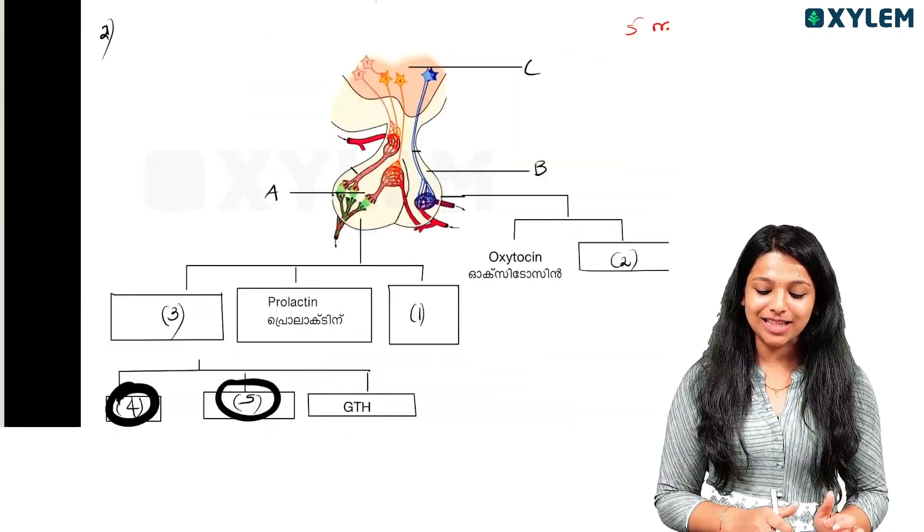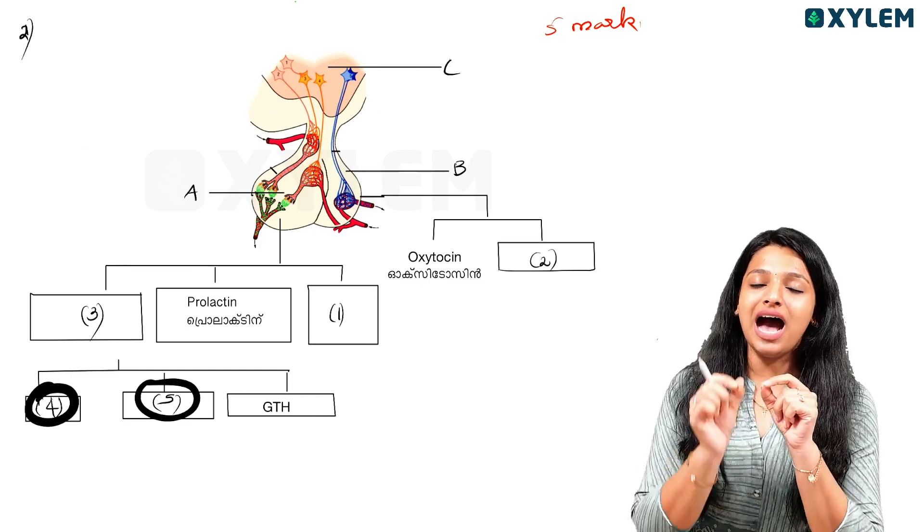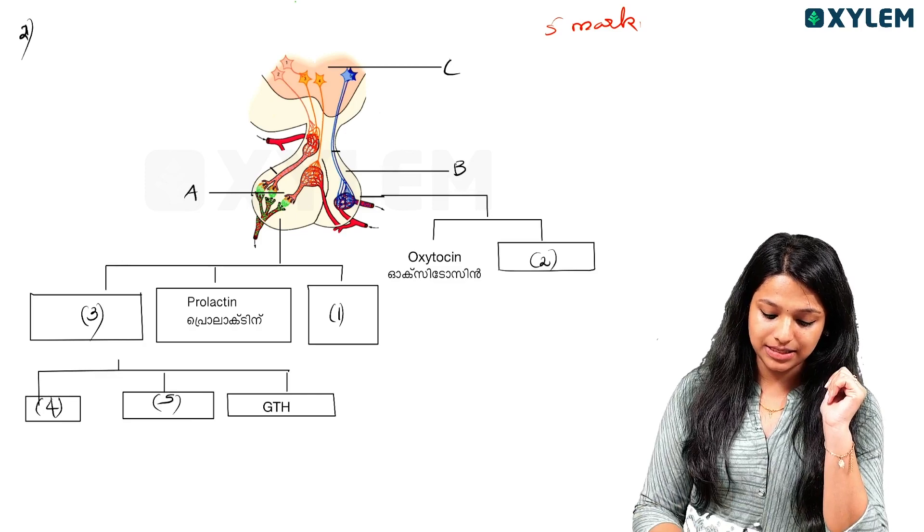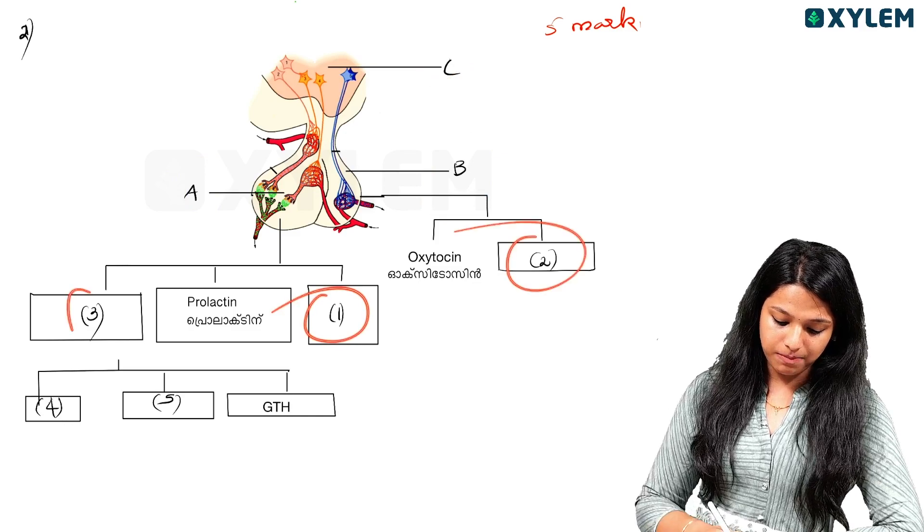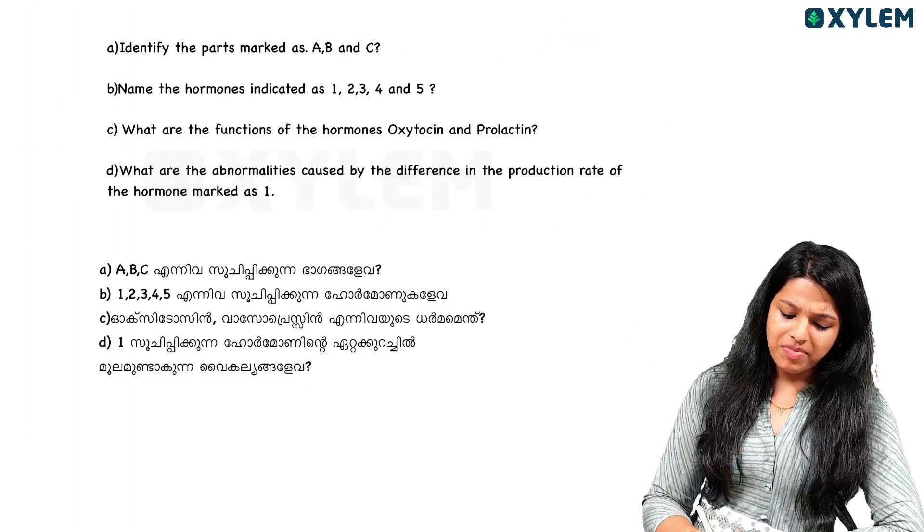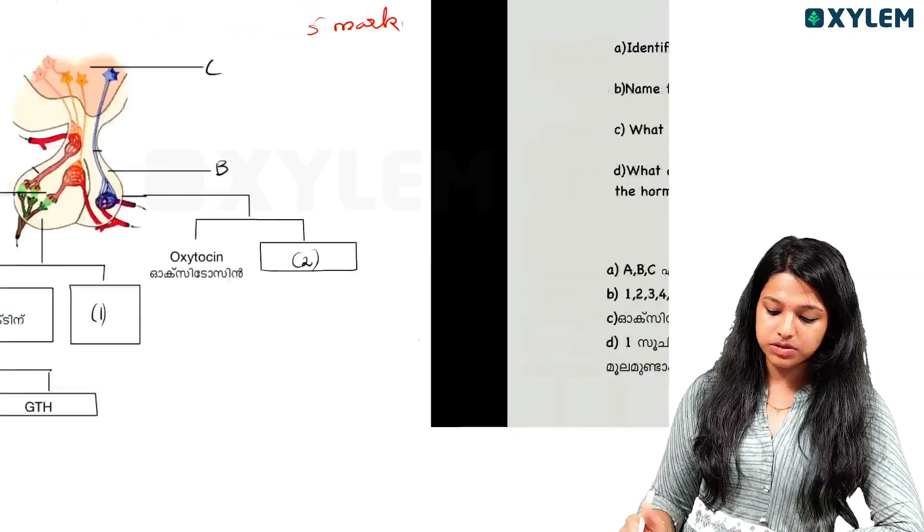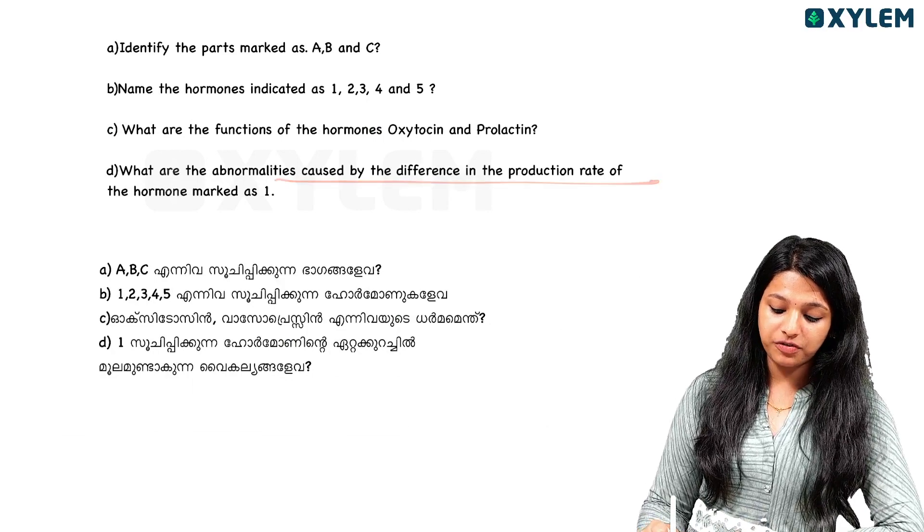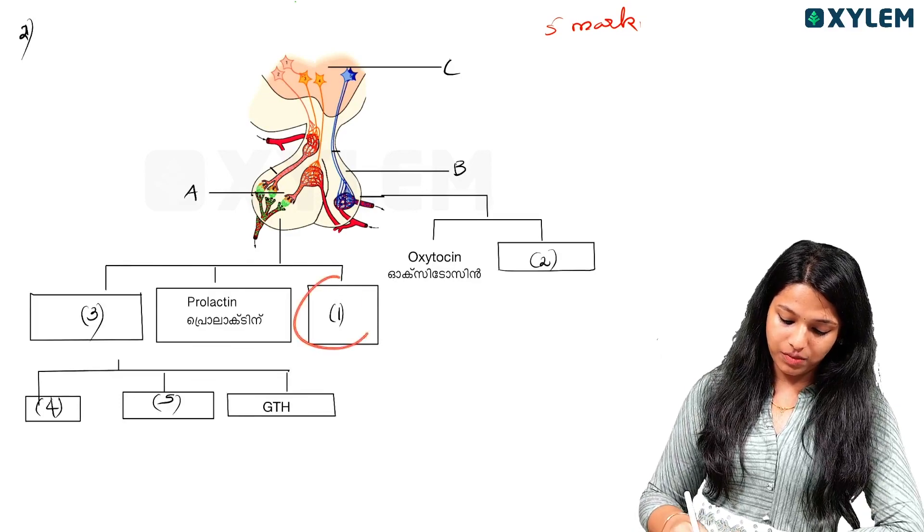Here is the question A, B, C, and the question. That is 1, 2, 3, 4, 5, identify ABC as well. 1, 2, 3, 4, 5. What are the functions of hormones oxytocin and prolactin? Oxytocin and prolactin function. What are the abnormalities caused by the difference in the secretion rate of hormones? Marked as 1.